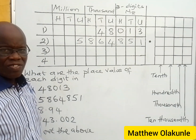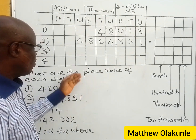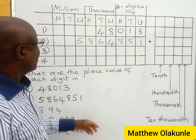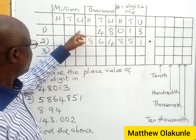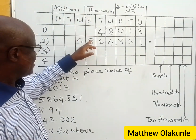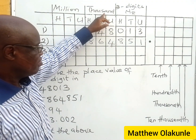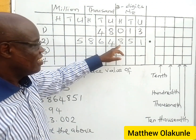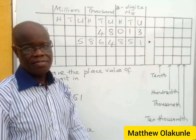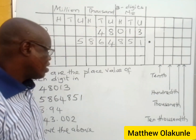So as simple as that. How do you read this number? If you look here, you have five million, eight hundred and sixty-four thousand, eight hundred and fifty-one. So that's how to read that one out.